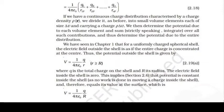For a uniformly charged spherical shell, as seen in Chapter 1, the electric field outside the shell is as if the entire charge is concentrated at the center. Thus the potential outside the shell is V = k·q/r, where r ≥ R, q is the total charge, and R is the radius of the shell.